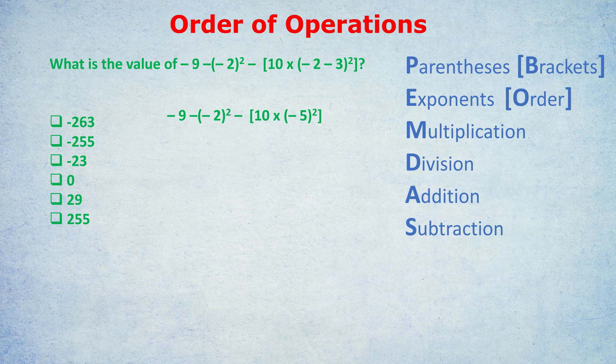With the inner brackets done, we move on to exponents. The outer brackets contain negative 2 and negative 5, with nothing left to simplify there. We have negative 2 squared and negative 5 squared. Important: on the left, there's also a negative outside the bracket. Don't cancel the negatives before squaring — we do exponents before multiplication. Negative 2 squared = positive 4, but with the outside negative it becomes negative 4. Negative 5 squared = positive 25.